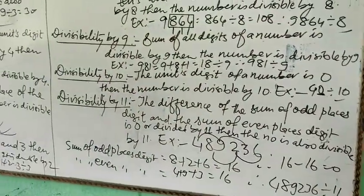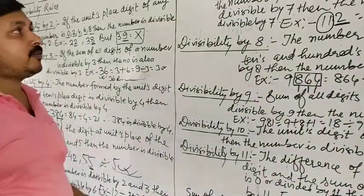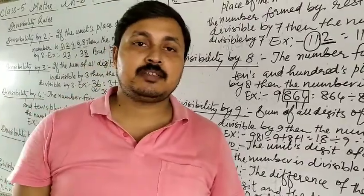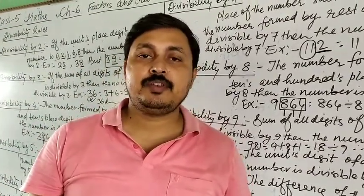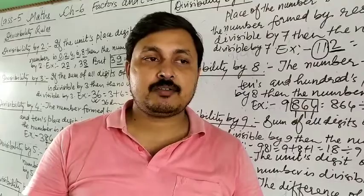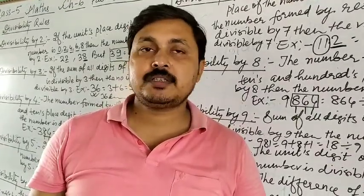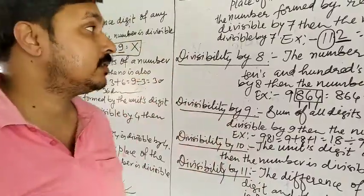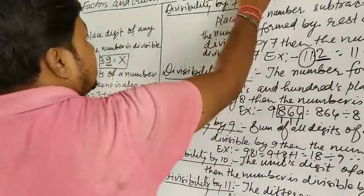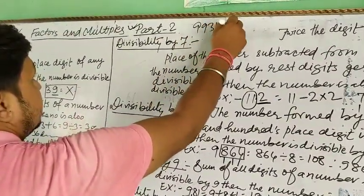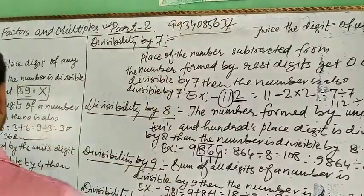You can solve all these types of problems in exercise 6.2. If you have any problem, you must contact me or send the problems on my WhatsApp. I will respond after solving it. My WhatsApp number is 9934085637. Thank you.